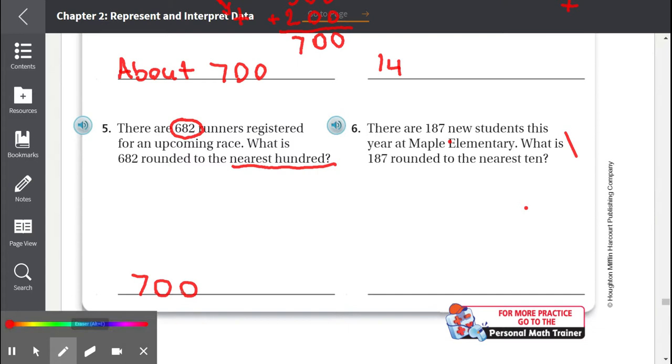Number 6, there are 187 new students this year at Maple Elementary. What is 187 rounded to the nearest ten? So we have 187. And we round it to the nearest ten. So 187 is between 180 and 190 when rounding to the nearest ten. But it will be closer to 190. So 187 when rounded to the nearest ten becomes 190.